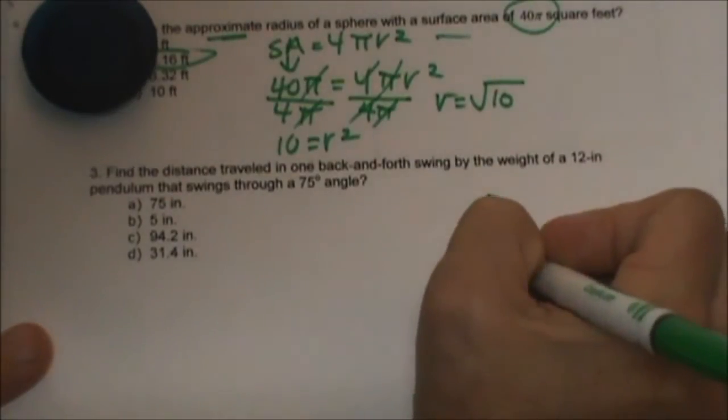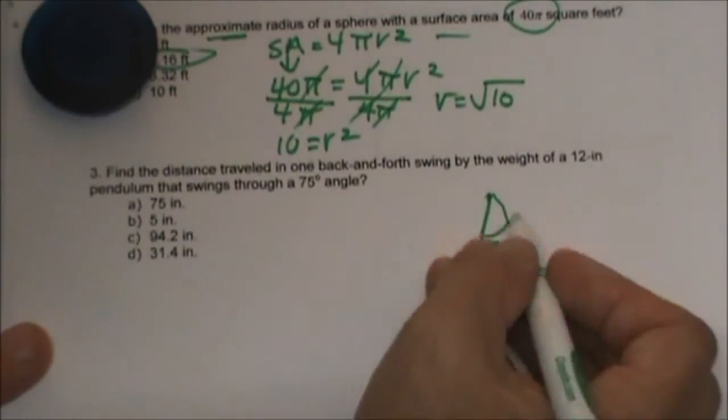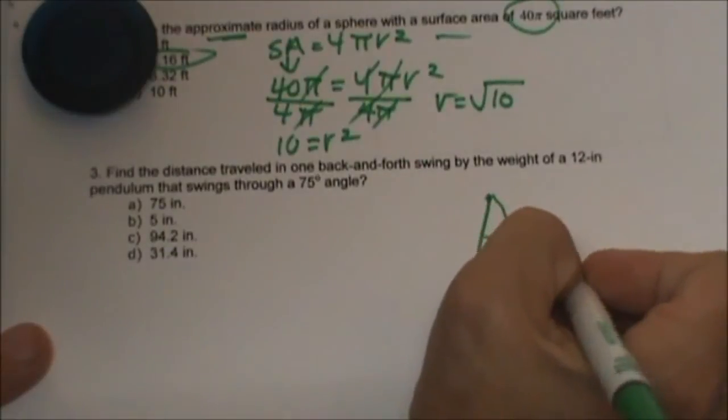The pendulum is swinging at 75 degrees. The length of the pendulum is 12 inches.